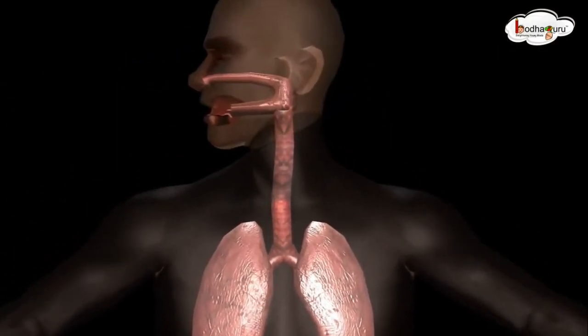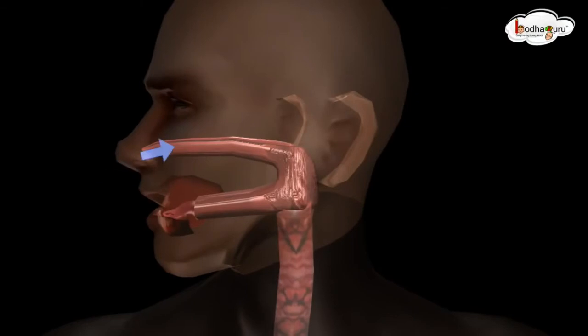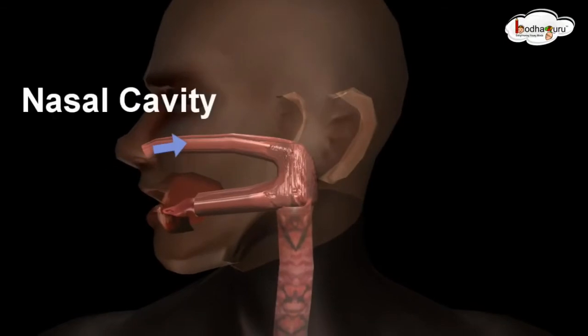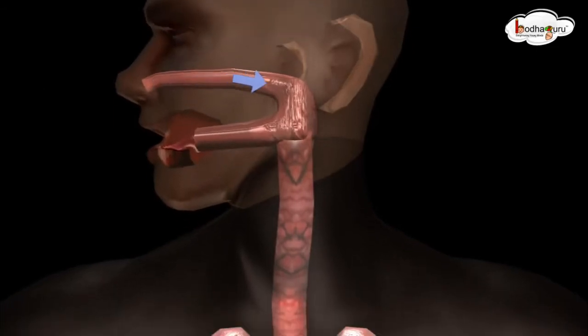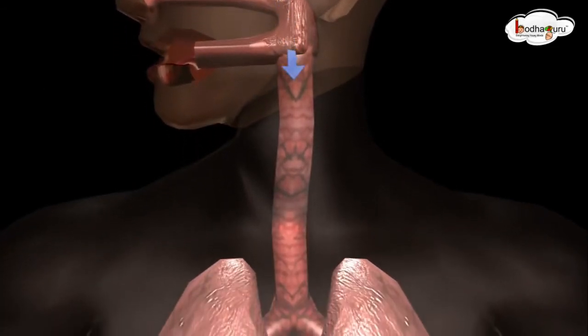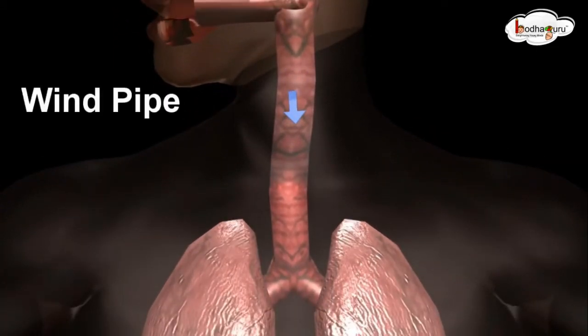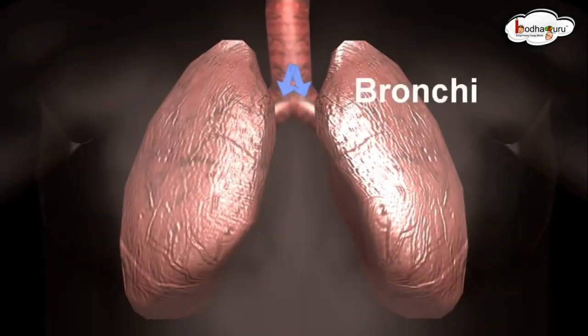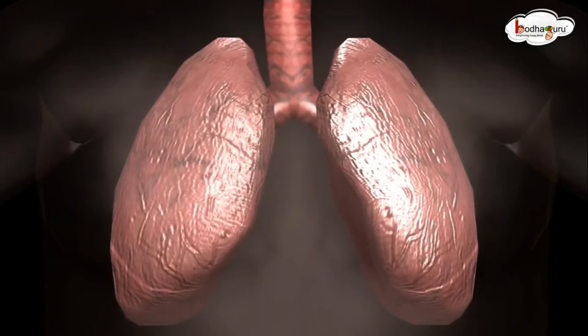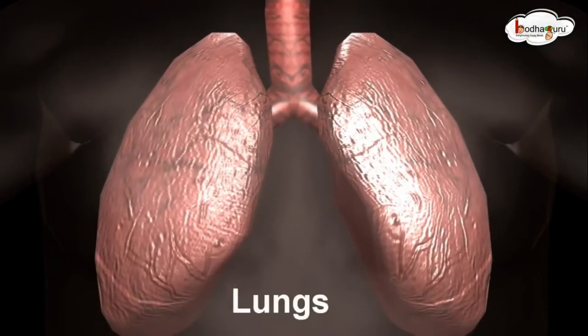When we take in air, it passes through our nostrils into the nasal cavity. From the nasal cavity, the air passes through the windpipe. The windpipe is also called the trachea. The air then reaches two small tubes called bronchi, and then it reaches our lungs.